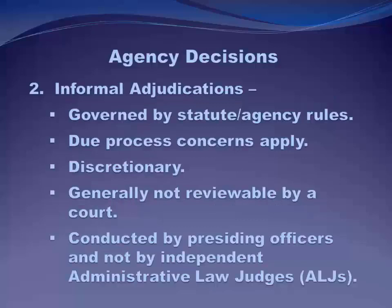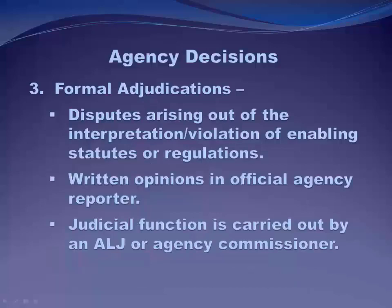The next level up in complexity is an informal adjudication. The procedure for informal adjudications is not prescribed by the APA. Procedural rules for these types of adjudication can be either prescribed by the agency's enabling statute — when Congress creates them they might include some procedural rules — or they're left to the agency's discretion, either by formal regulation or an internal document describing its procedural rules, rules of evidence, and due process.